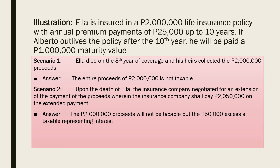Illustration: Ella is insured under a $2,000,000 life insurance policy with annual premium payments of $25,000 up to 10 years, totaling $250,000 in premiums. If Alberto outlives the policy after the 10th year, he will be paid a $1,000,000 maturity value. Scenario 1: If Ella died on the 8th year of coverage and the heirs collected the $2,000,000 proceeds — since the 10-year term was not yet reached — the entire $2,000,000 is not taxable, because it is insurance on account of the loss of life.